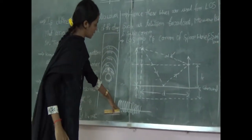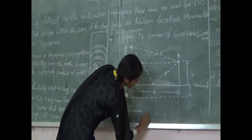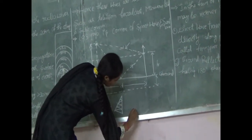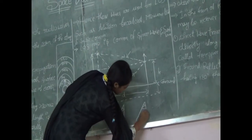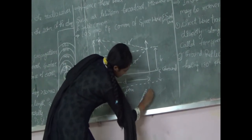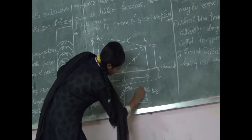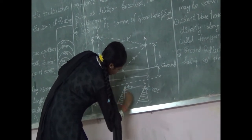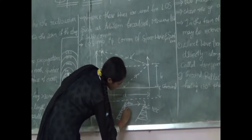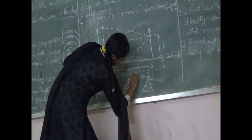This is propagated in a straight path. For example, one antenna is the transmitter and another antenna is the receiver. The wave propagation from the transmitter to the receiver follows a straight line path.